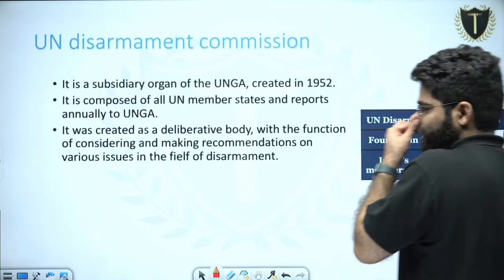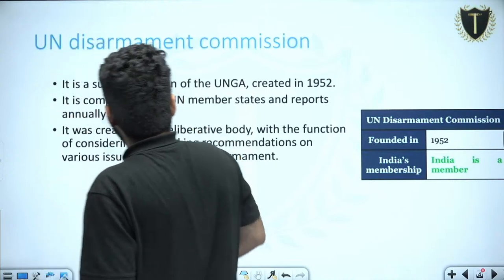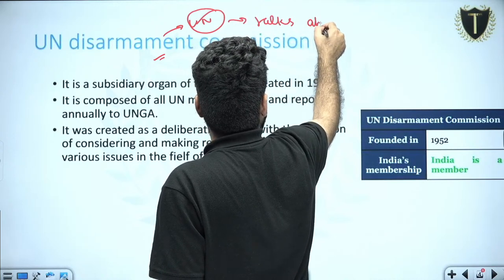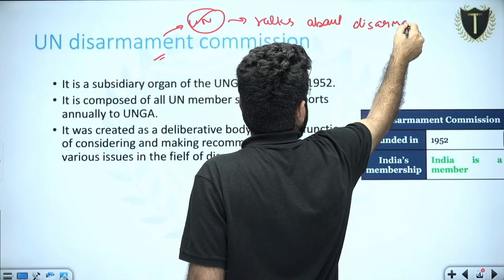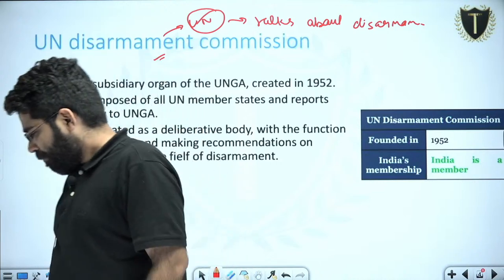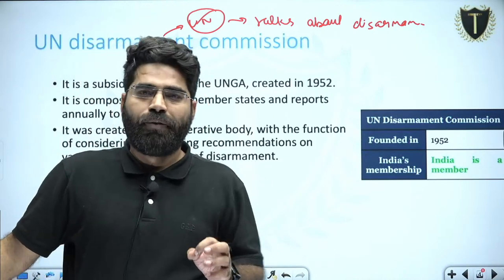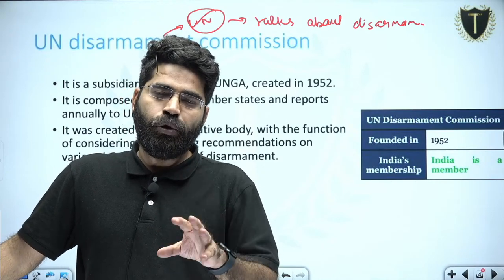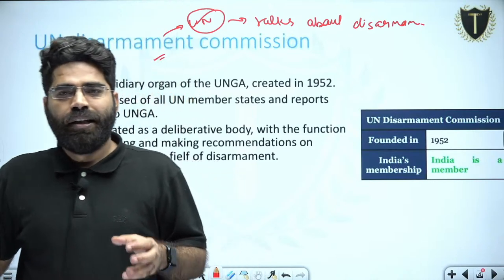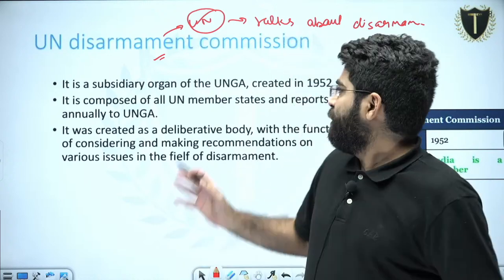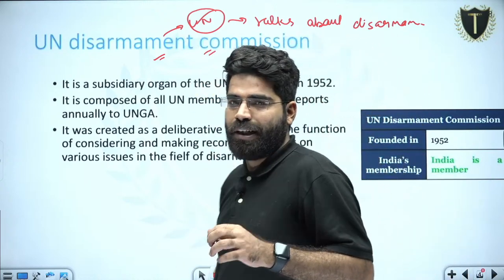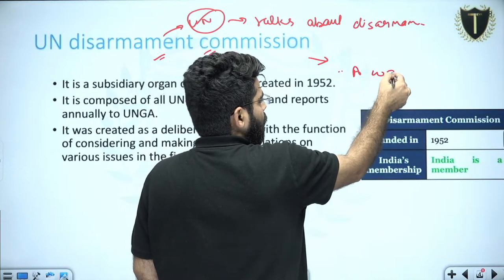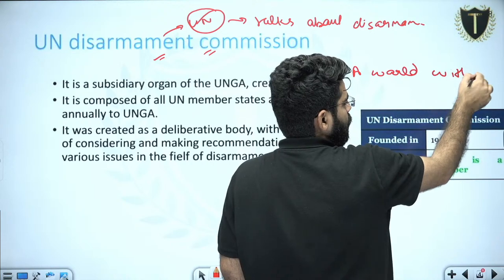Moving on to the UN Disarmament Commission — basically it is an organ of the United Nations, and it talks about disarmament. We want fewer countries using nuclear fuel as a nuclear weapon. For a peaceful world, the UN Disarmament Commission is working toward a world with no nuclear weapons.